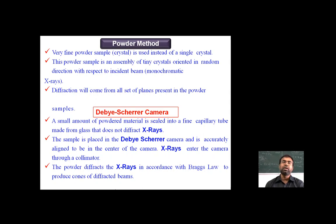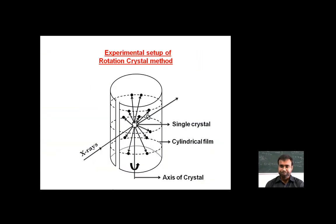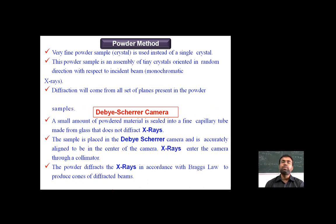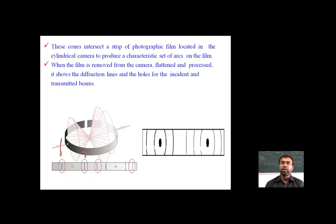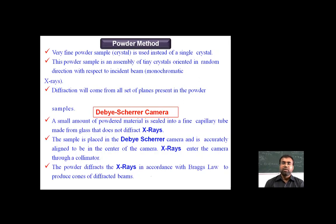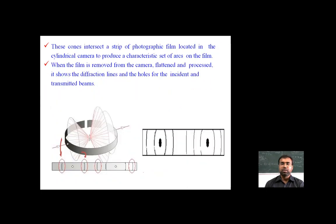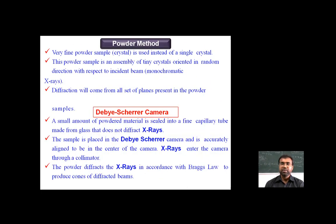The powder method uses a very fine powder sample instead of a single crystal. The powder sample is an assembly of tiny crystals oriented in random directions with respect to the incident monochromatic X-ray beam. Diffraction will come from all sets of planes present in the powder.